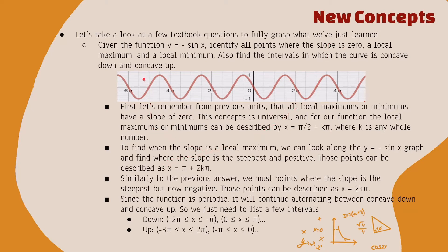Finding where the slope is a local maximum is a little more tricky, but we just need to remember what that means. For the slope to be a local maximum, we need the steepest positive slope possible. Looking at the graph, if we draw tangent lines along the curve, the line starts straight and then slowly curves down — we were going down, so it's negative, and now it's standing straight up, meaning it's the steepest it could be. So that point is actually a local minimum of the slope. Using the same reasoning, we find that another point is a local maximum. Since these are periodic, we can determine where all subsequent local maxima and minima occur.